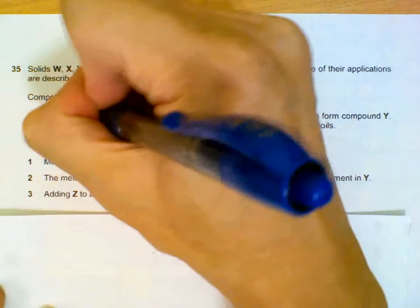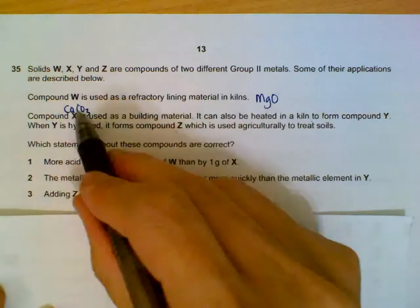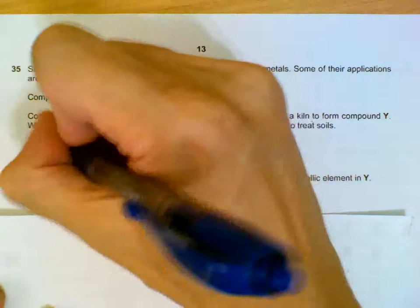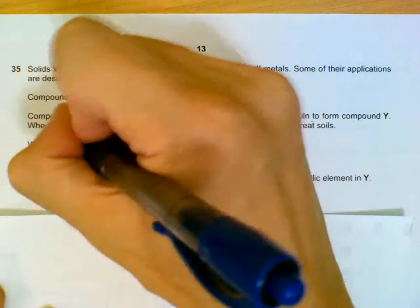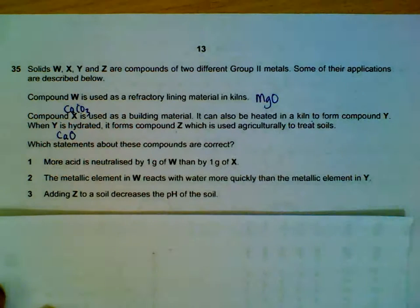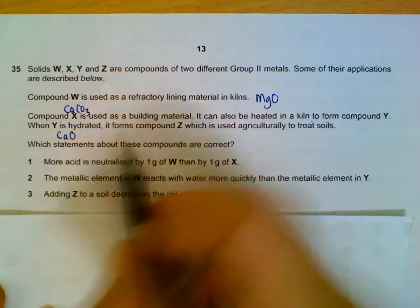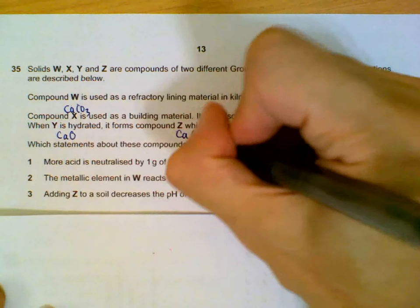The building material calcium carbonate, when heated, forms calcium oxide and carbon dioxide. If we hydrate it, we get calcium hydroxide, which can be used to neutralize acidic soil.